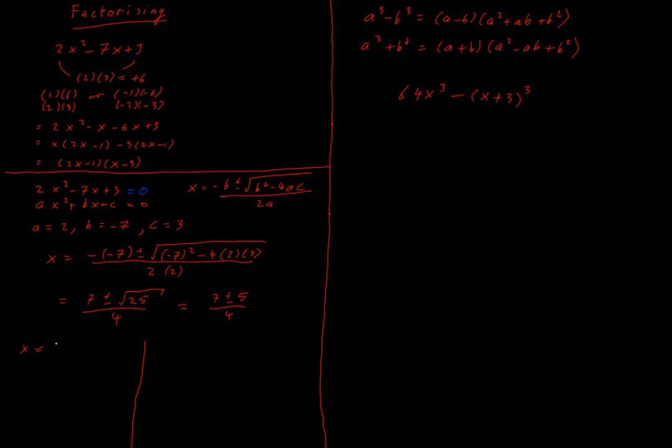So I have 7 plus 5 all over 4, or x equals 7 minus 5 all over 4. The root ends up being - 7 plus 5 is 12 - we end up with 3 for one equation. We end up with x equals a half as the root of the other equation. Now, if I picture how I would have done this in junior cycle...